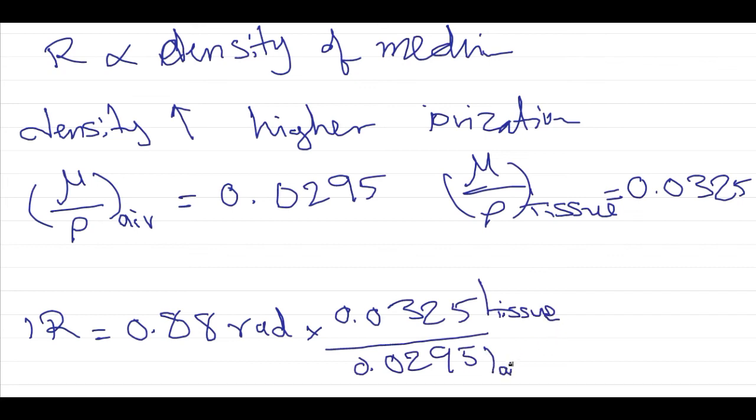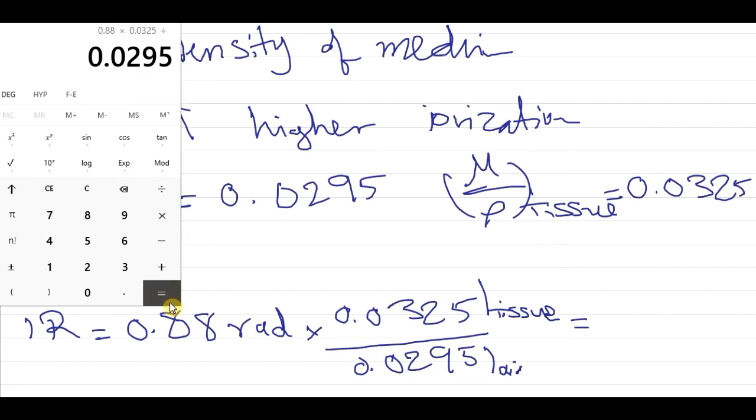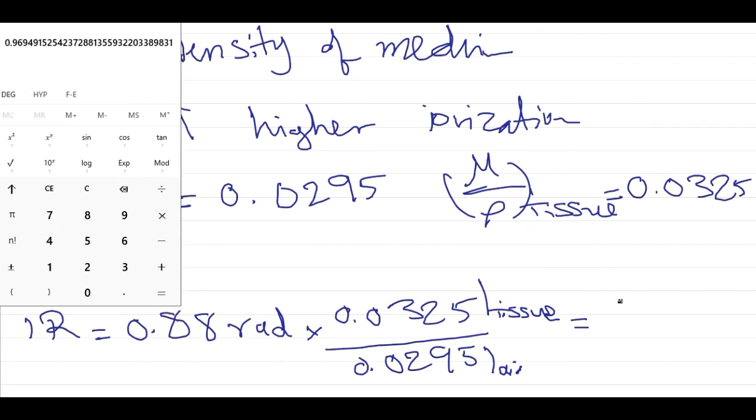This gives us 0.88 times 0.0325 divided by 0.0295, which equals 0.969, or we can round it to 0.97 Rad in tissue.